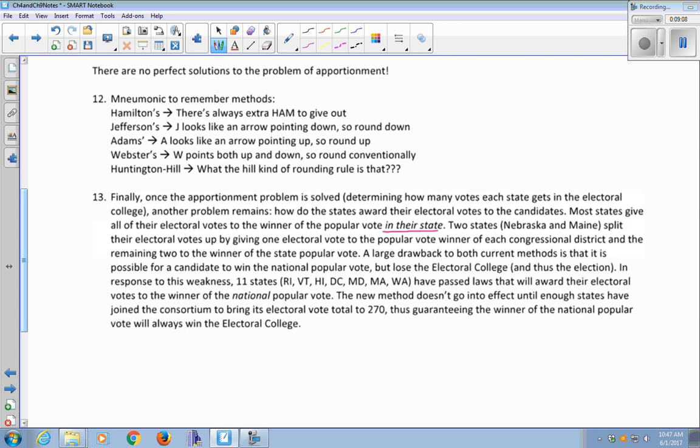In response to this weakness of the electoral college system, 11 states, Rhode Island, Vermont, Hawaii, D.C., Maryland, Massachusetts, and Washington, have passed laws that will award their electoral votes to the winner of the national popular vote, instead of their state's popular vote. The new method won't go into effect for any of those 11 states. The method doesn't go into effect until enough states have joined this group to bring its electoral vote total to 270. That's the magic number that you need to win the presidency, 270 electoral votes. So once enough states have joined, that their electoral college votes total 270, that will guarantee that the winner of the national popular vote will always win the electoral college.